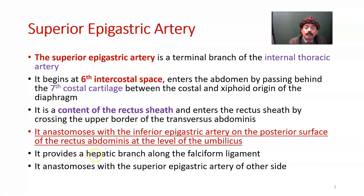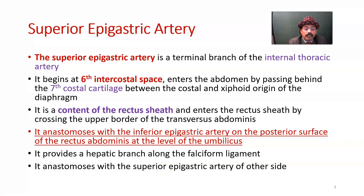It provides a hepatic branch along the falciform ligament. It also anastomoses with the superior epigastric artery of the other side near the lower part of the xiphoid process usually.